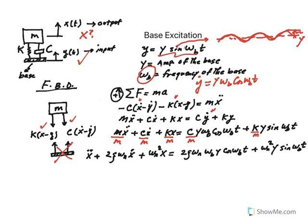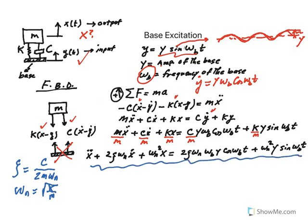You remember that we normalize it. Remember that these terms like zeta was defined as the ratio of c divided by 2m omega n, right? And omega n is the square root of k over m. That's where these equations come from.